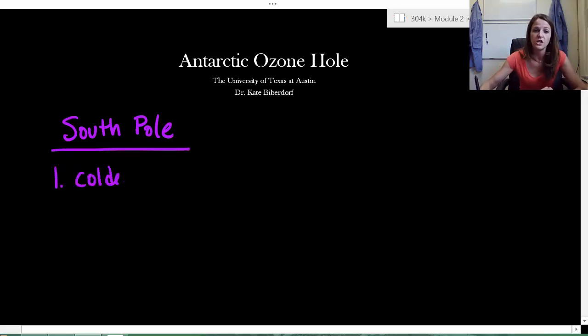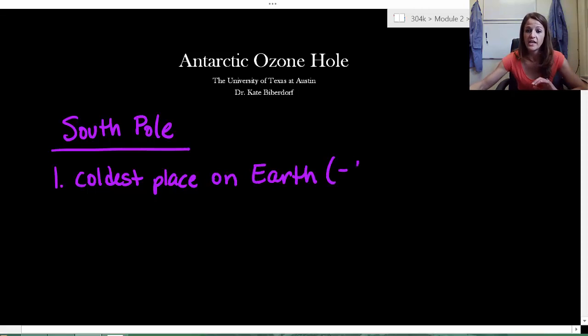So first things first, the South Pole is the coldest place on earth, coldest anywhere. And so its coldest number is about negative 90 degrees Celsius. Now Celsius, that's not a number we normally use. So let's translate that: negative 130 degrees Fahrenheit. Now let's put this into perspective.